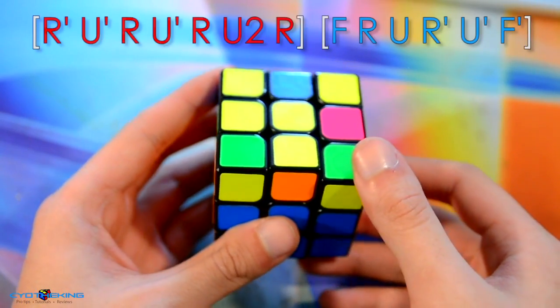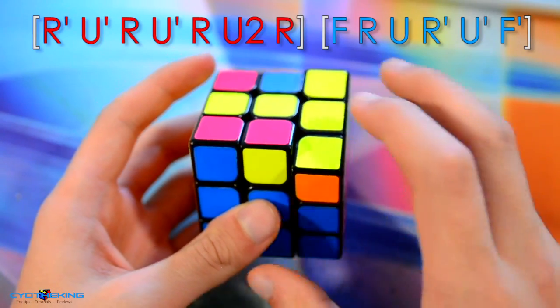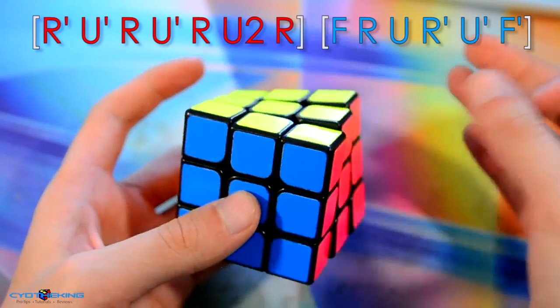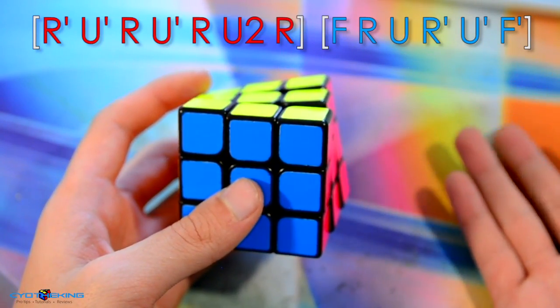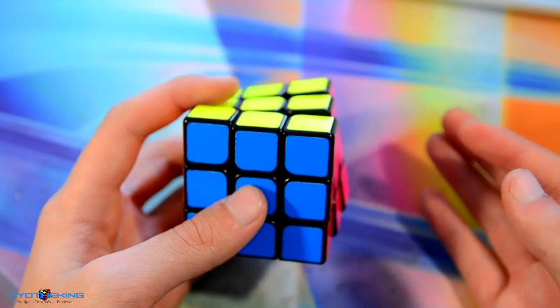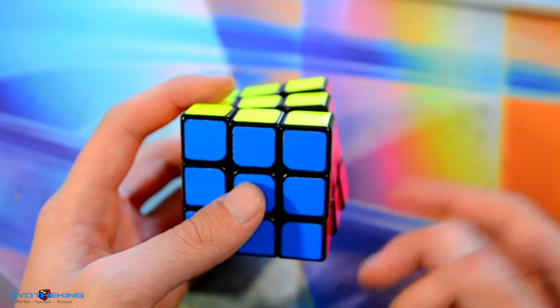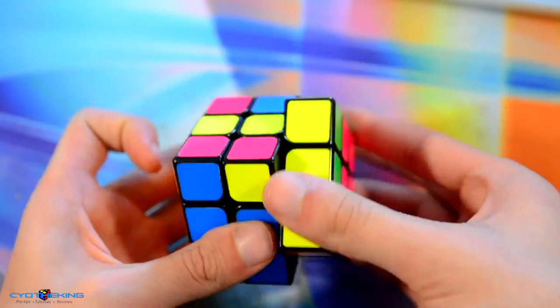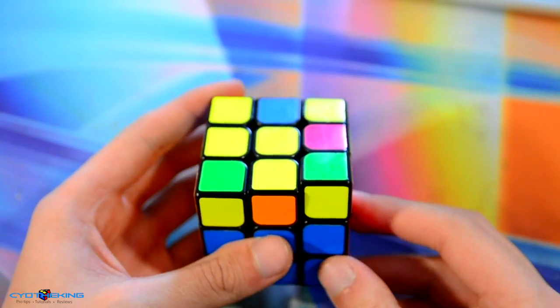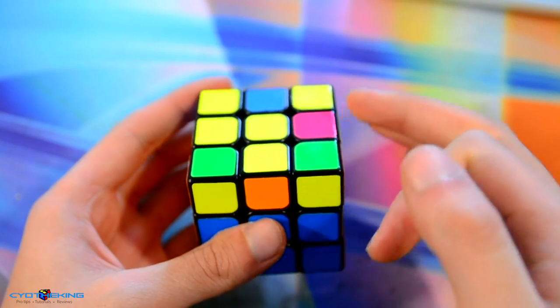Another common thing with algorithms is that they're just two algorithms put into one. This case right here is really easy. It's just an anti-soon followed by F sexy F prime. So as you learn more algs, you'll see things like this. A lot of the ones that are two algorithms put into one are really basic algs like this one was just anti-soon followed by F sexy F prime.